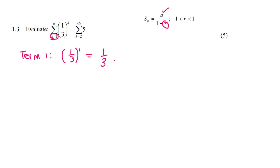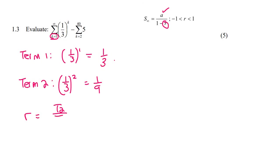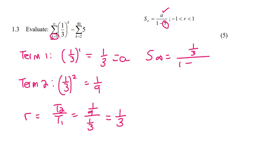You also need R. To find R we're going to need to find term 2. Term 2 is a third to the power of 2, which is 1 over 9. Then you can find R by saying term 2 divided by term 1, that's 1 over 9 divided by a third, and if you do that on the calculator that gives you a third. So R is a third, and we can work out the sum to infinity: A over 1 minus R is (1/3) over (1 − 1/3), and if you work this out we get a value of a half.